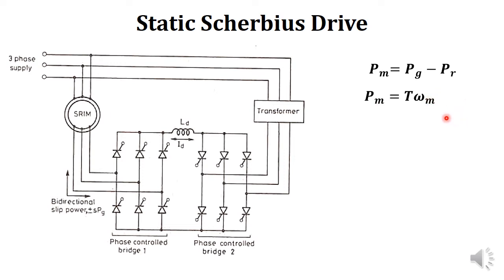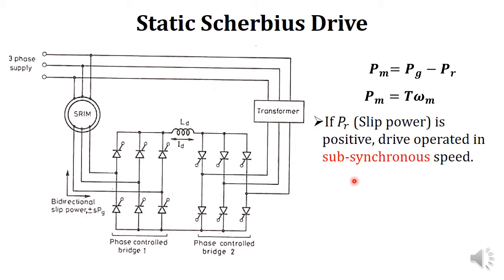If Pr is positive, the value of Pg − Pr decreases, which means Pm decreases, and if Pm decreases, ωm — that is the speed of the motor — decreases. So the motor operates in sub-synchronous speed, that is below synchronous speed operation, when Pr is positive. If Pr is negative, it means the direction of power flow is from supply mains to motor.